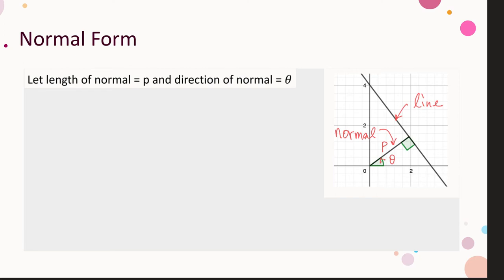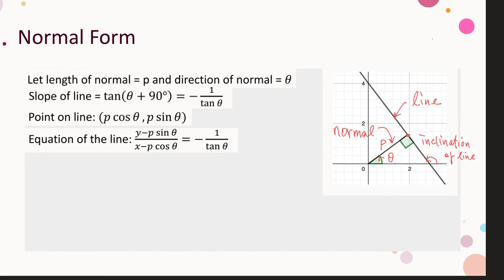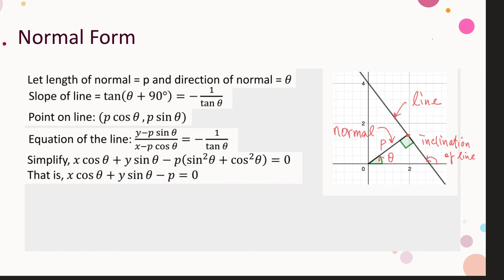Here, θ helps us get the slope of the line. By the exterior angle of a triangle, the slope of the line equals tan(θ + 90°), that is, −1/tan θ. Also, p and θ together give us the foot of the perpendicular: (p cos θ, p sin θ). Now we have the slope and a point on the line. By the point-slope form, we derive the equation of the line. Simplifying, we get x cos θ + y sin θ − p = 0. This is the normal form of a straight line.